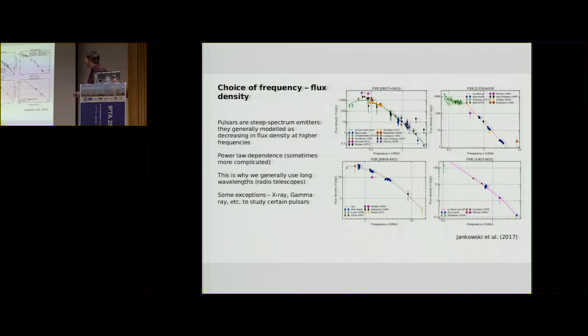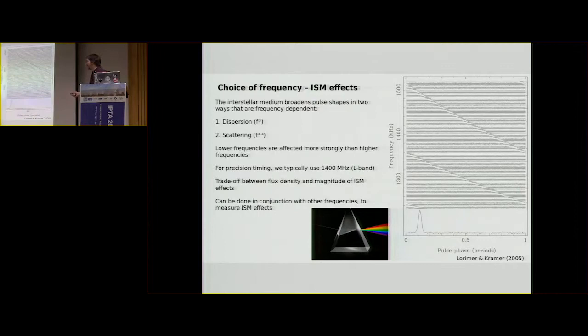So it might seem kind of strange that we observe at 1400 megahertz. You might think, well, why don't we just go as low as we possibly can? It's way brighter at low frequencies. But the problem is we run into interstellar medium effects that scale with frequency. So the lower the frequency, the more pronounced the interstellar medium effect. And there are two dominant ones that really impact us when we're observing pulsars.